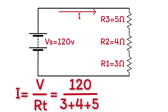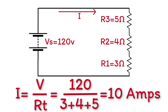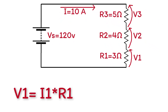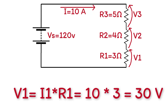That gives us 10 amps. To calculate the voltage across each resistor, we apply Ohm's Law again. V1 equals I1 times R1. Since all series resistors share the same current, V1 equals 10 amps times 3 ohms, which equals 30 volts.